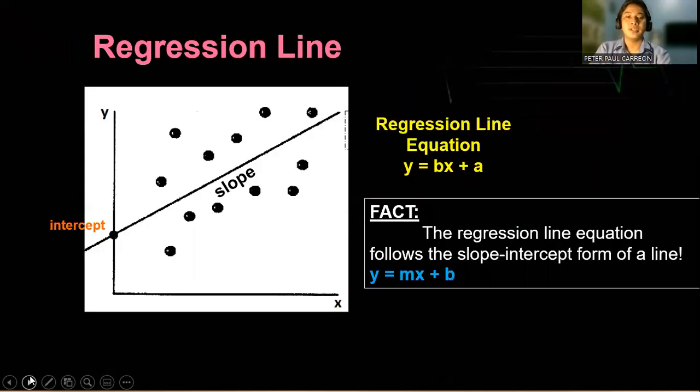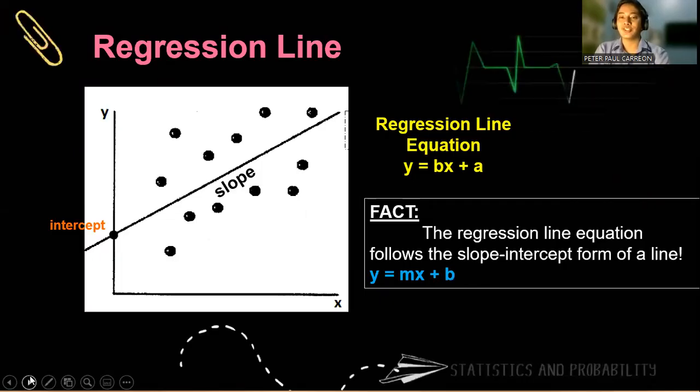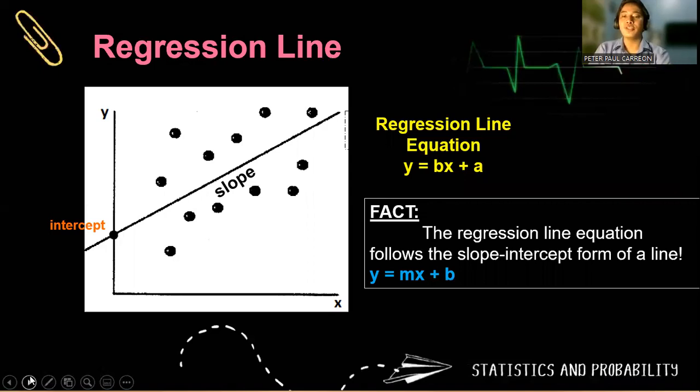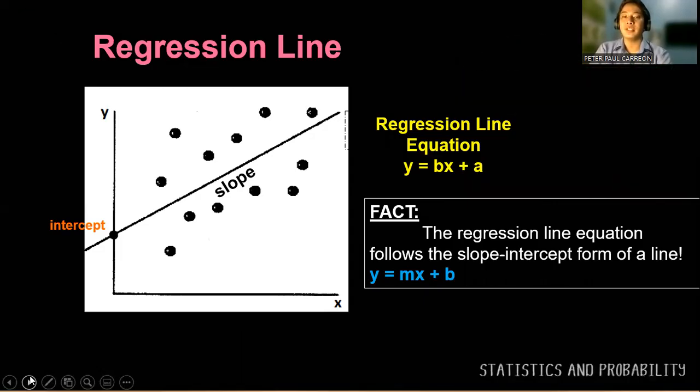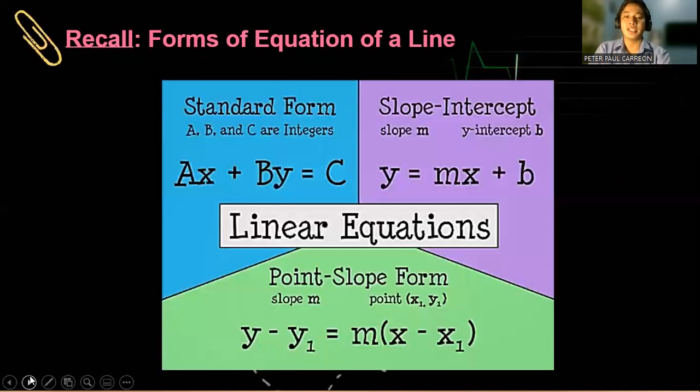So how do we predict the regression line? The regression line equation is y = bx + a. Remember that the regression line equation follows the slope-intercept form of a line y = mx + b. So meaning our m is your b, and your a, which is the intercept, is b here. So it's kind of mixed up.